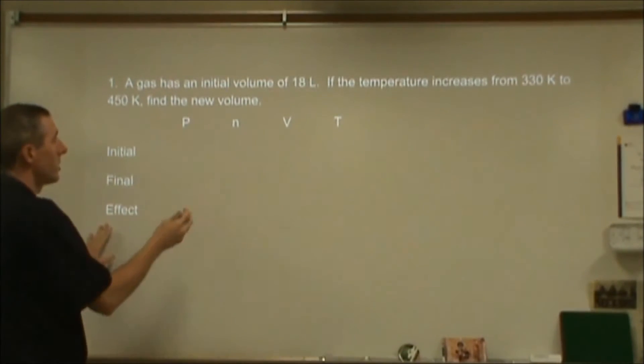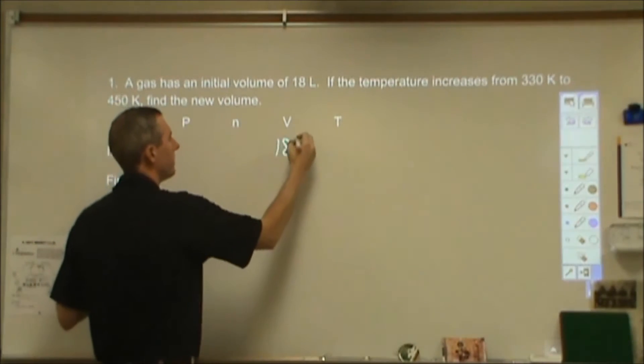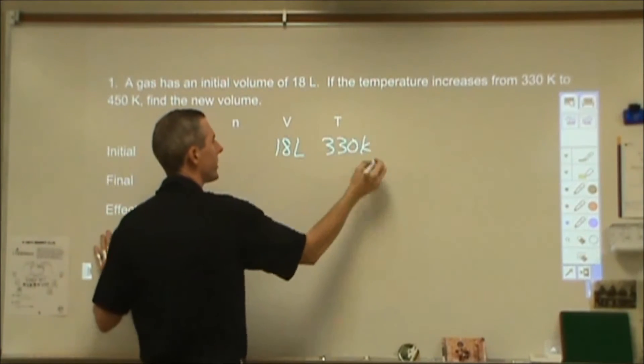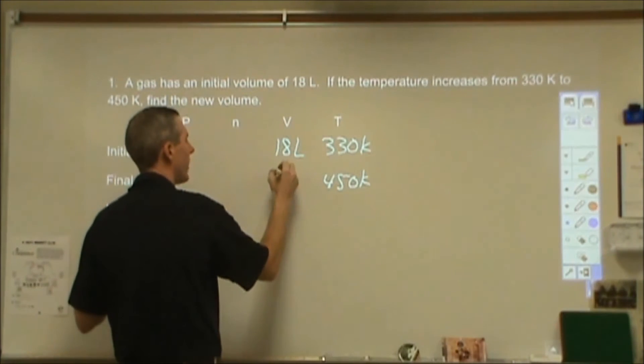Surely you could go through and use an equation to solve that. However, the other way to do this is to simply fill out a chart like this. So we have 18 liters of gas to start. Our temperature goes from 330 Kelvins. We're in Kelvins. That's the final is 450 Kelvins. We're looking for what our final volume is.